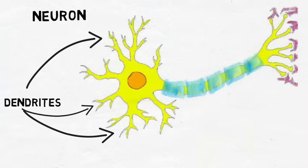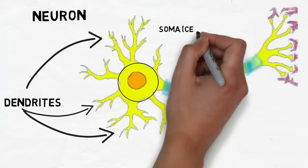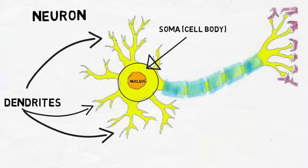Those signals picked up by dendrites cause electrical changes in a neuron that are interpreted in an area called the soma, or the cell body. The soma contains the nucleus, which contains the DNA, or genetic material of the cell.